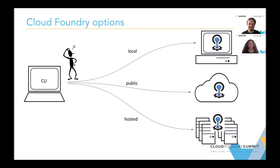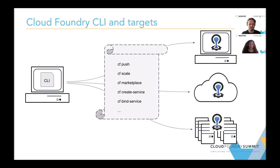Cloud Foundry offers you different options to use it. You can either use it locally with a local installation on your machine, use one of the different public providers, or use one of the hosted options on larger data centers. No matter where you run Cloud Foundry, you will always end up seeing this generic API across the different options, which is the Cloud Foundry CLI. You will have this basic set of Cloud Foundry commands: CF Push to push your application, CF Scale to increase and decrease the number of instances, CF Marketplace to see the different services offered, and the CF Create and Bind Services commands to create a service instance and bind it to your application.